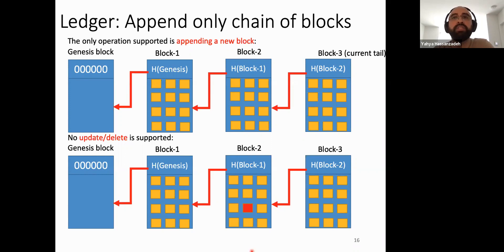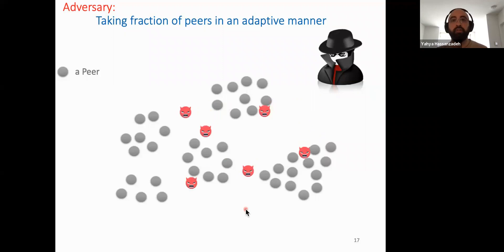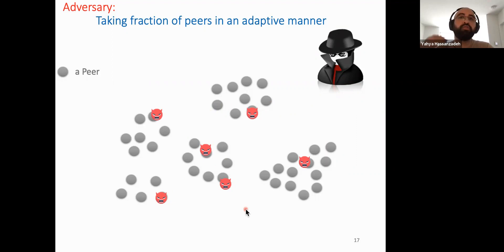We assume the existence of an adversarial party — a single party with one interest but capable of corrupting several nodes. Those corrupted nodes no longer follow the instructions of the blockchain protocol and can do arbitrary tasks in the system. We will talk about the fraction of nodes the adversary can corrupt.